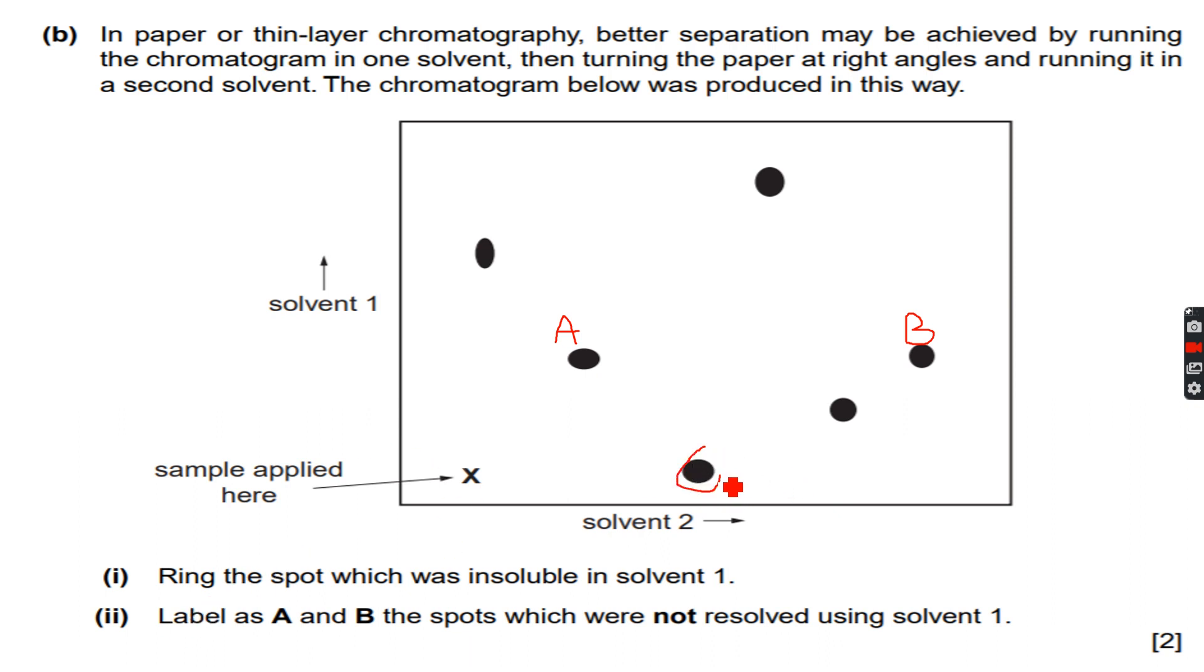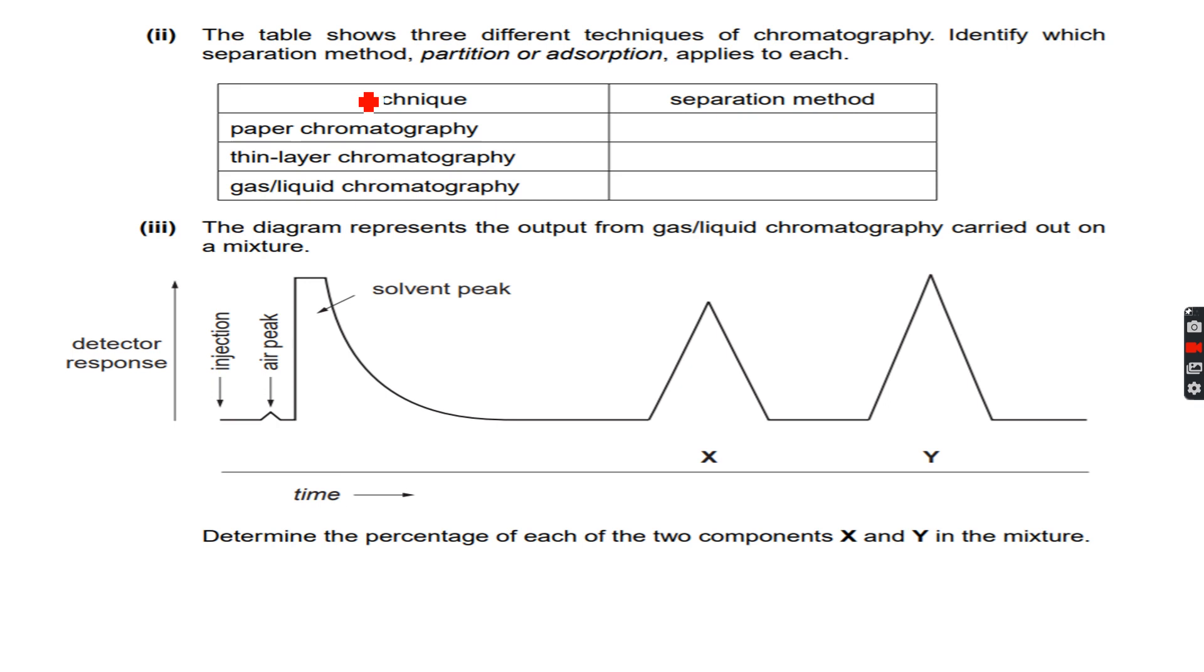The table shows three different techniques of chromatography. Identify which separation method, partition or adsorption, applies to each. So paper chromatography, we know it's partition. Thin layer chromatography, obviously adsorption. And gas liquid chromatography, partition again. Thin layer chromatography is the only adsorption we have done till now.